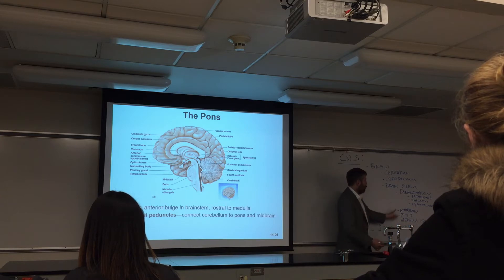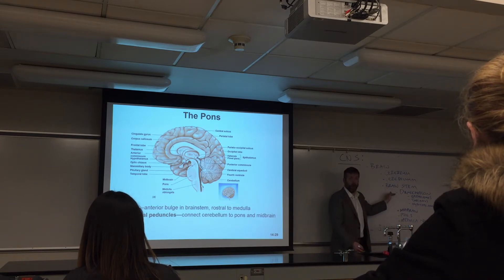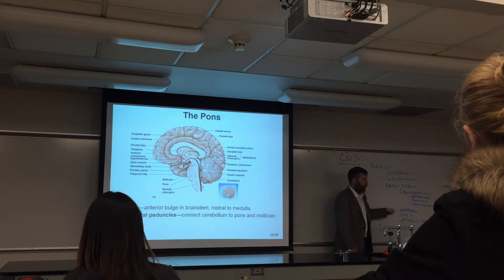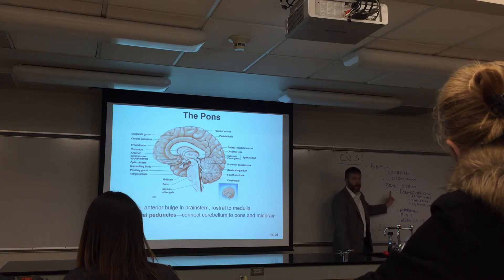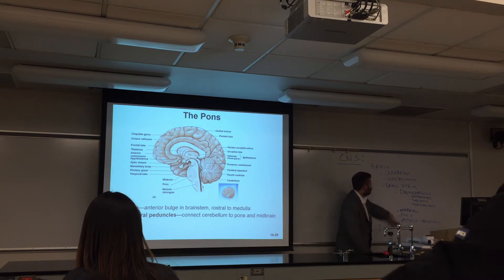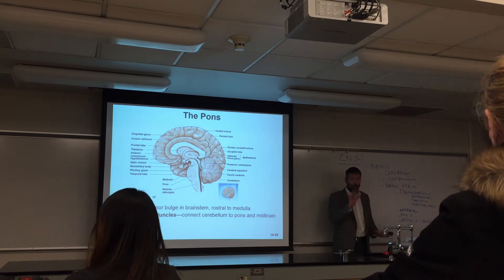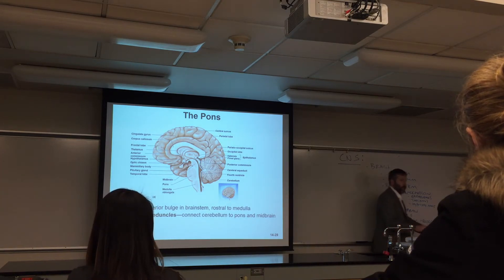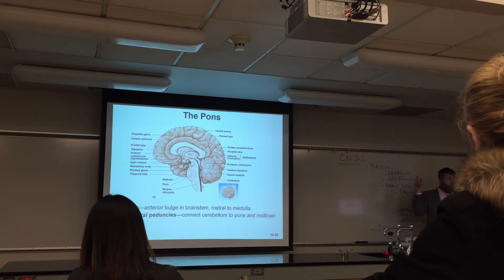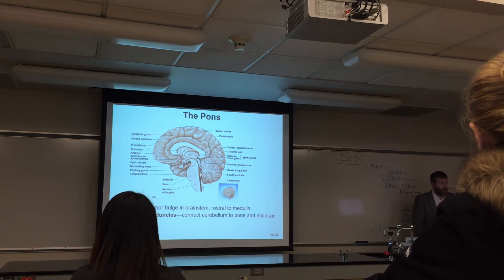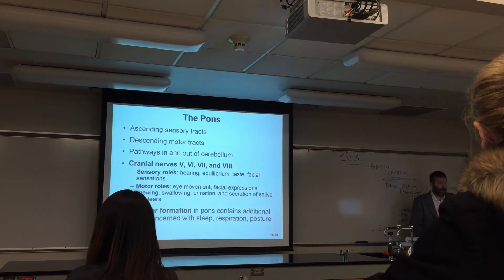Last class we took a closer look at the structures that make up the brain stem — inferior to superior: medulla oblongata, the pons, the midbrain, and the diencephalon. We left off before we could take a closer look at the cerebellum. We're going to talk about the cerebrum and cerebellum today, while the brain stem was covered last time.